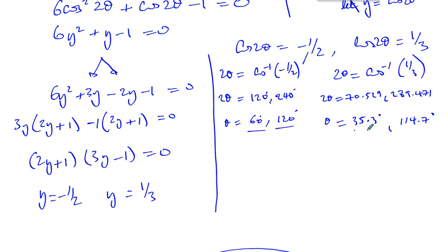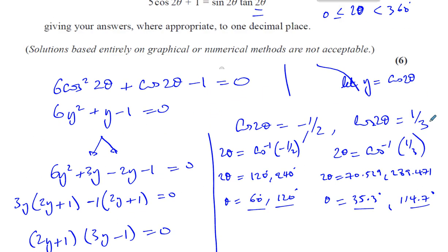So we have four solutions to this question. For cosine: shift cosine gives one answer, then 360 minus that gives the other, and you can generate further solutions by adding or subtracting 360. For sine: shift sine gives one answer, and 180 minus that gives the other, because the sine curve is symmetrical about 90°. For tangent: just shift tan gives your answer, and then keep adding or subtracting 180 since the tan curve repeats every 180°.